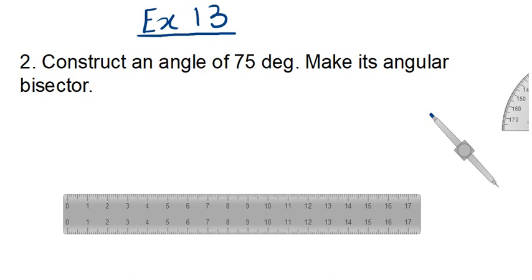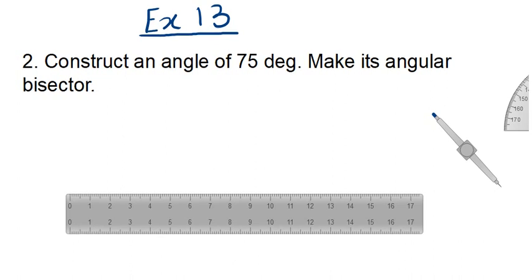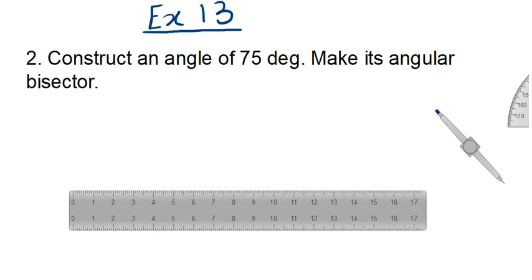So first of all we have to construct the angle of 75 degrees and then make its angular bisector. Constructing an angle means we have to use a ruler and compass — we cannot make it directly from the protractor.